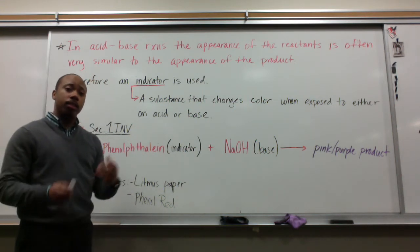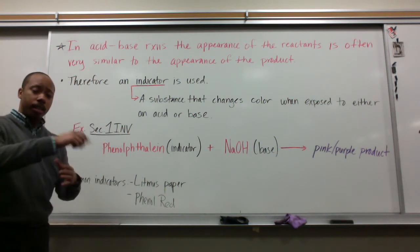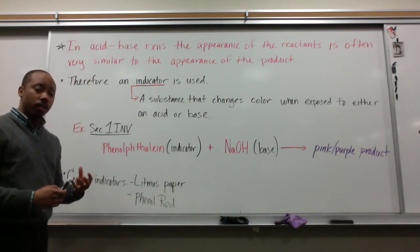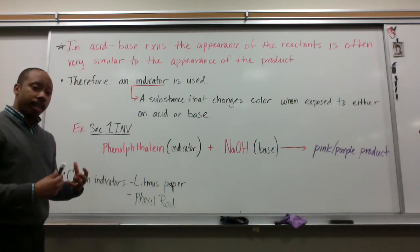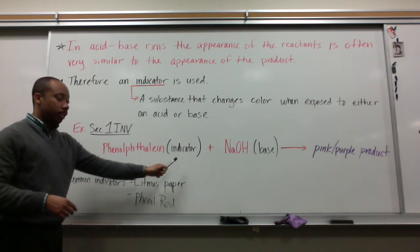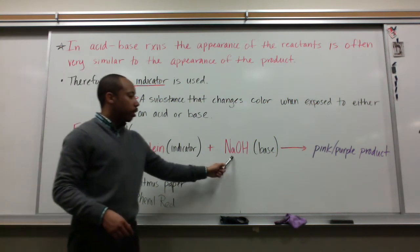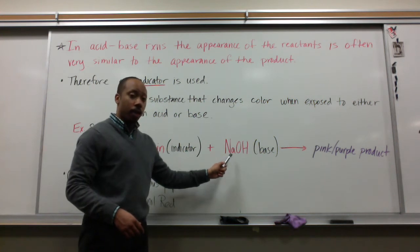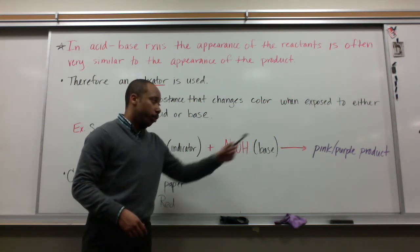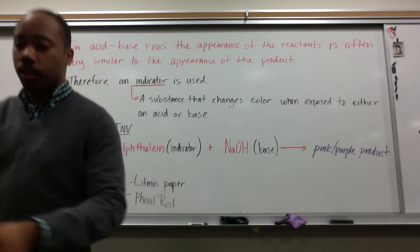We saw this in Section 1. In Section 1, we had our different stations around the room — our ten stations. One of the stations, you reacted phenolphthalein, which is an indicator, with sodium hydroxide, which we just identified as a base. When you did that, we made a pinkish-purple product.